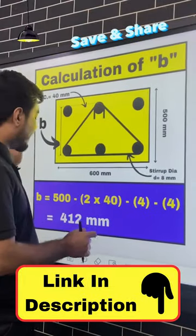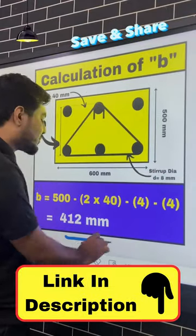In this case, we have vertical center-to-center distance. After subtracting two times the cover and two times the diameter from the total dimension, we get 412 mm.